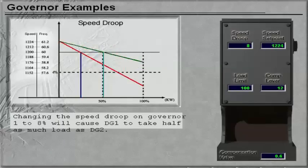Changing the speed droop on Governor 1 to 8% will cause DG1 to take half as much load as DG2.